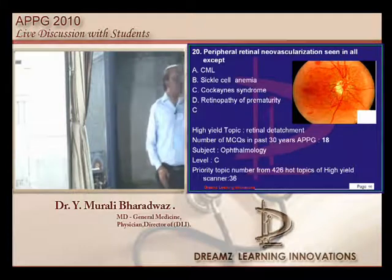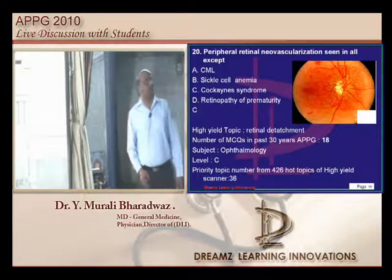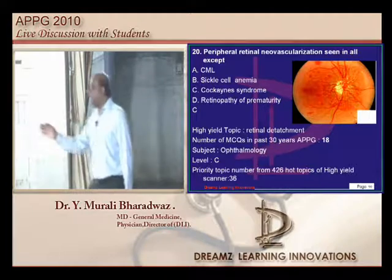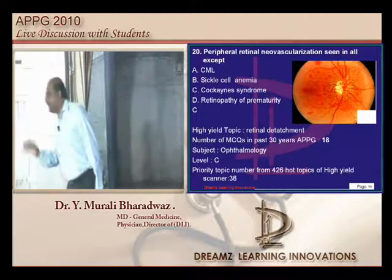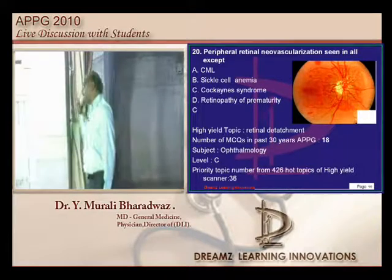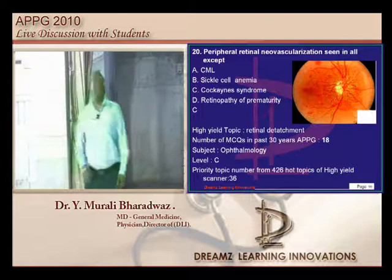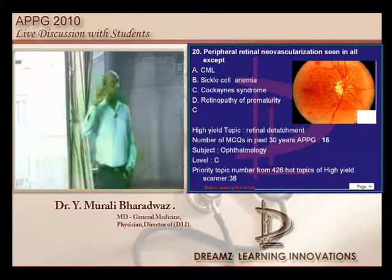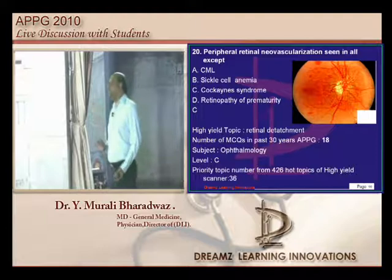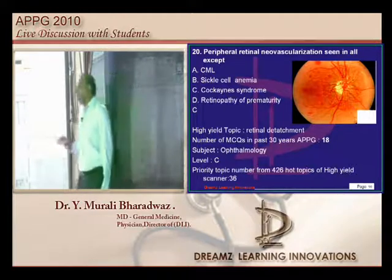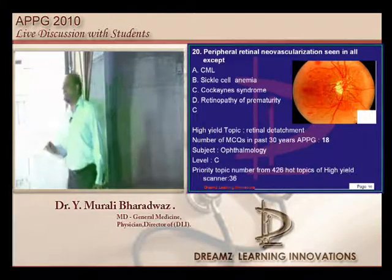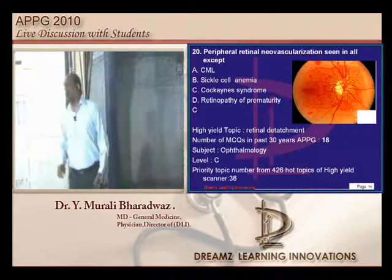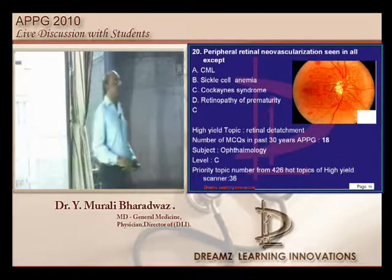Now, peripheral retinal neovascularization — where does it occur? Anything that leads to ischemia of the retina will promote neovascularization. That is why we see it with CML, sickle cell anemia, and retinopathy of prematurity — but not in Cockayne syndrome. In Cockayne syndrome you typically see retinal degeneration.